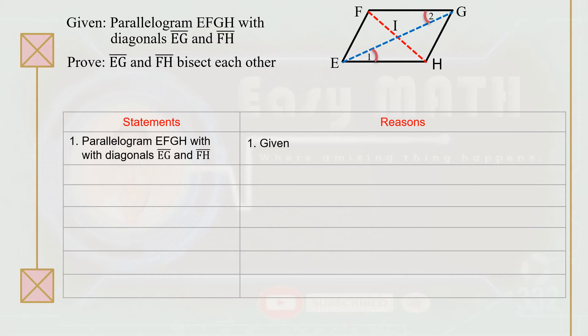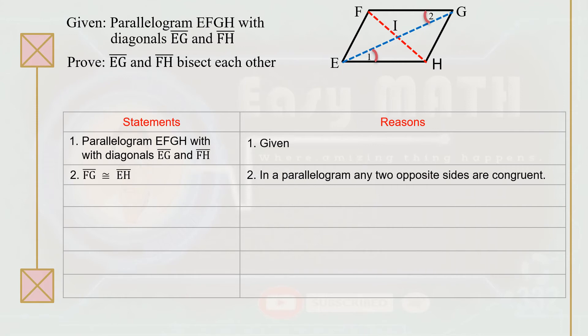Statement one: parallelogram EFGH with diagonals segment EG and segment FH is the given. Statement number two: segment FH is congruent to segment EH — in a parallelogram, any two opposite sides are congruent. Statement number three: angle 1 is congruent to angle 2, because they are alternate interior angles, and alternate interior angles are congruent.